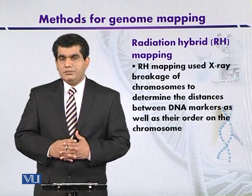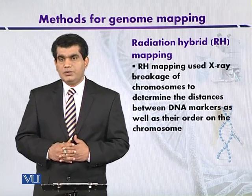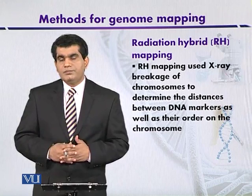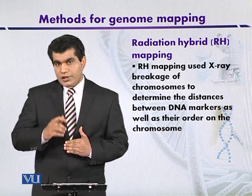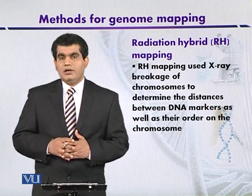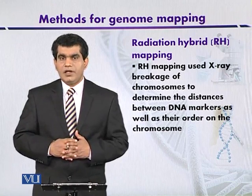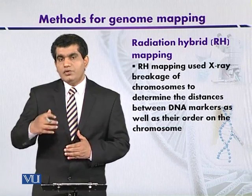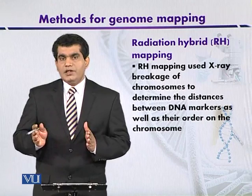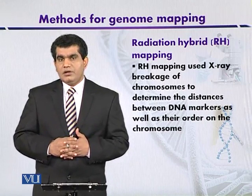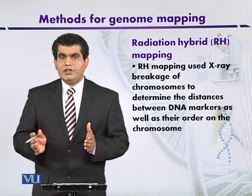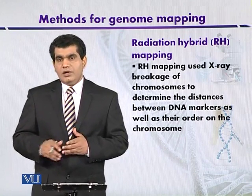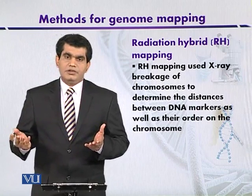Both of these cells can be fused to form a hybrid cell, which is formed as a result of the fusion of two cells. The irradiated cell, whose DNA has been fragmented by X-ray exposure, acts as the donor DNA, and the un-irradiated rodent cell acts as the host or recipient cell. The resulting hybrid cell is a human-rodent hybrid cell.